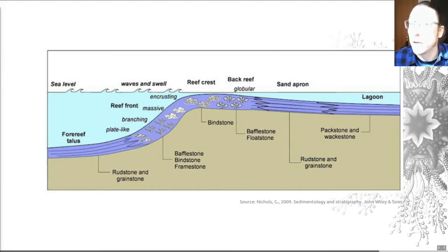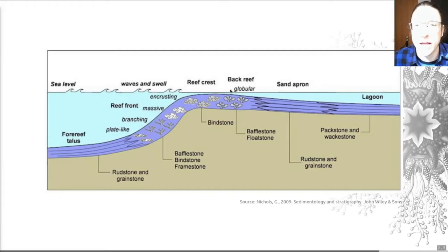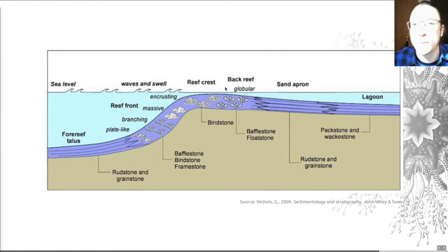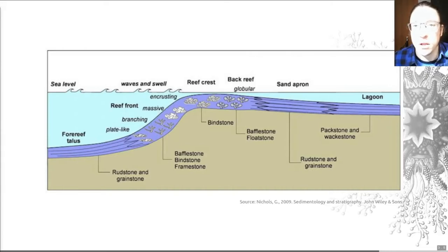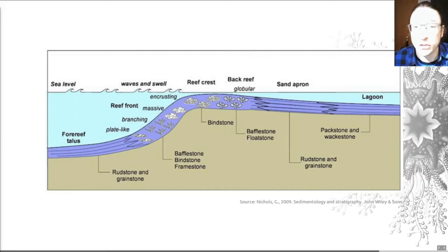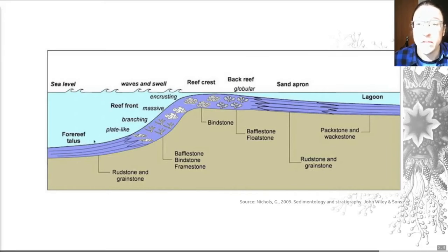The reef flat also comprises relatively robust forms, but conditions become quieter the further you move back towards the reef flat, and when you get slightly quieter conditions, you tend to get globular coral forms — rounded and bulbous, shaped much like a globe. If you get deeper in front of the reef, on the reef front, the really robust massive corals are often replaced by branching or more delicate plate-like forms because you have lower energy, deeper water. You also get break-up of materials in the reef by wave and storm action, producing a talus of debris that builds up out to sea.